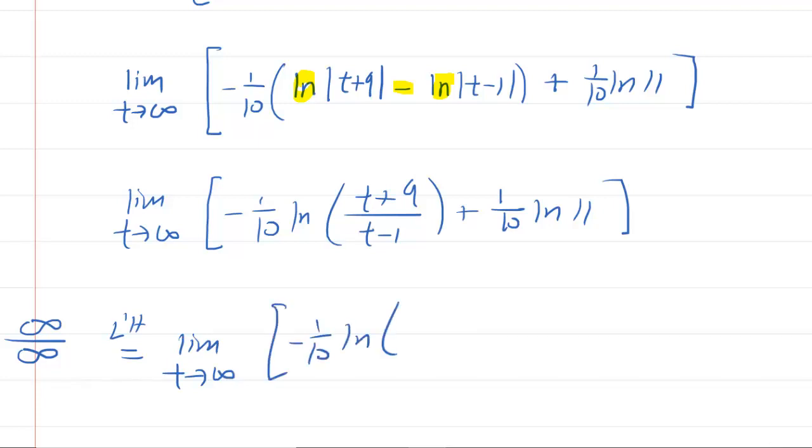We just take the derivative of the numerator, which is 1, and the derivative of the denominator, which is also 1. And something actually surprising happens here, because you end up with the natural log of 1.